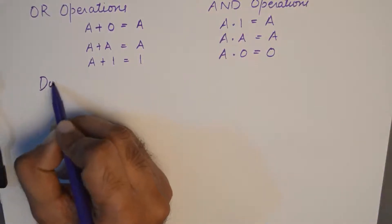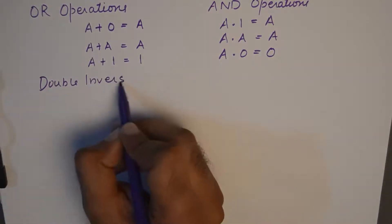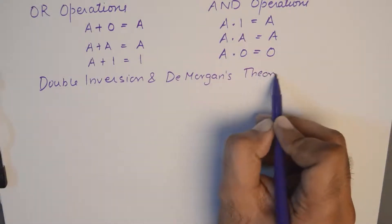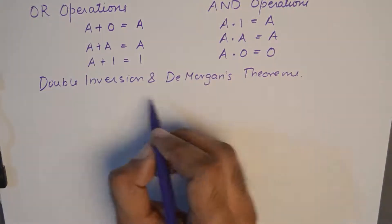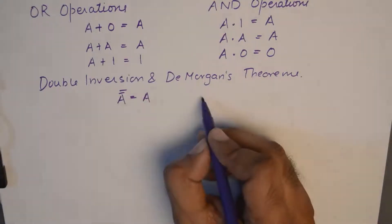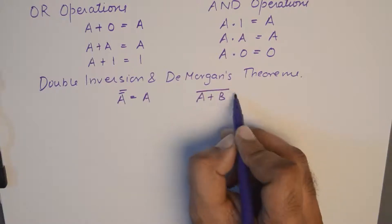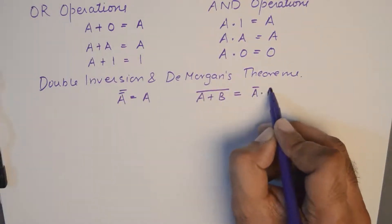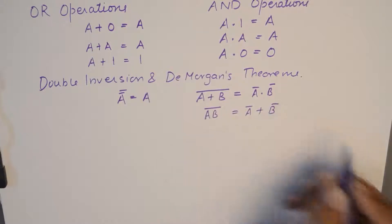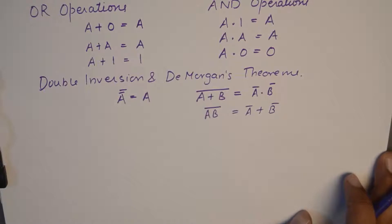And then we have double inversion and De Morgan's theorem. The double inversion says that the double bar of A is equivalent to A. And the two De Morgan's theorems are A plus B whole bar is equivalent to A bar dot B bar, and AB whole bar is equivalent to A bar plus B bar, which are very well verified using the truth table method by taking values of A and B all possible values which are 0, 1, 0, 0, 0, 1, 1, 0 and 1, 1 for both left hand side and right hand side.